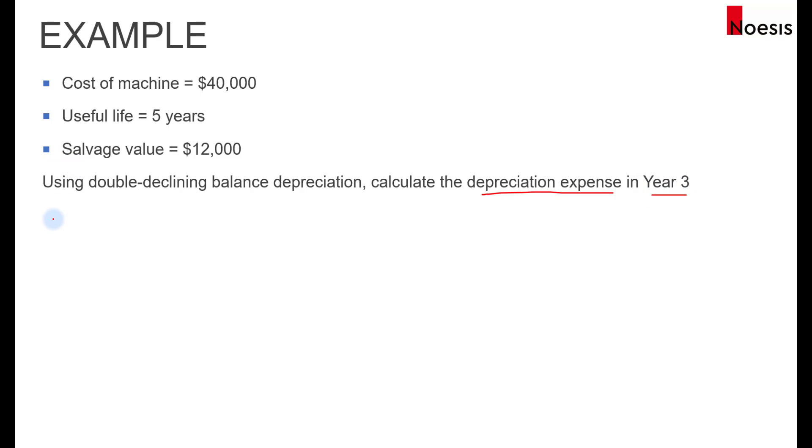Using the formula, in year 1, the depreciation expense will be 2 over 5, the useful life, multiplied by 40,000 minus the accumulated depreciation expense. So we will get 16,000.